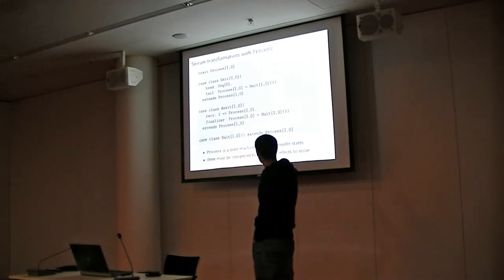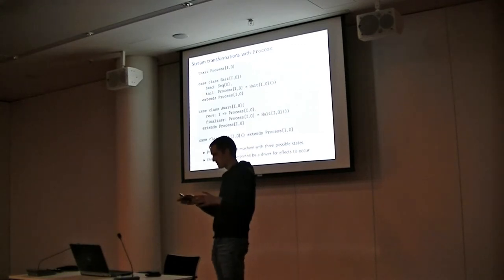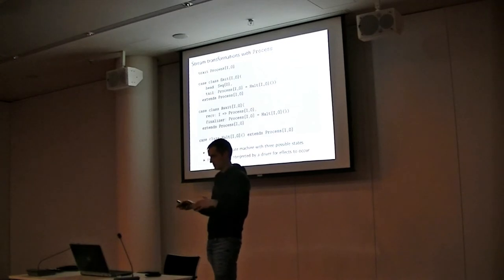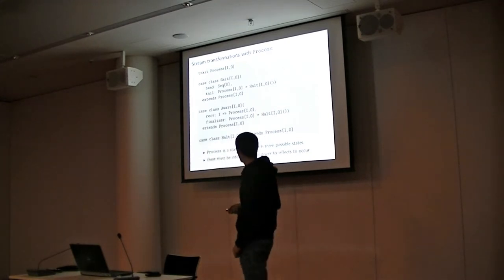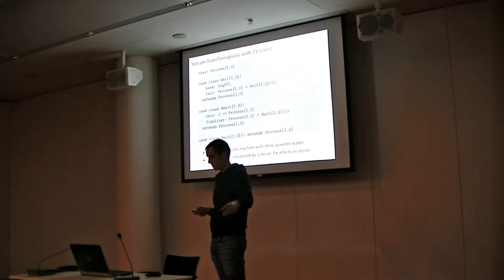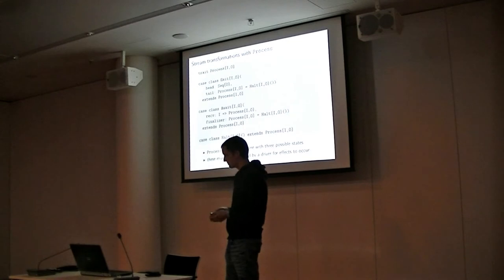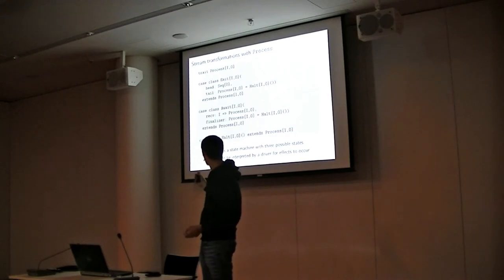The first state is Emit, which signals to the driver we have here a sequence of O values which should be emitted. This is the head, and then we have the tail which should be the next state after emitting these values. Then there is the Await state, which signals to the driver we would like to read an I value and generate a new state from this I value. If there is no more I value available, Finalize will be the next state.